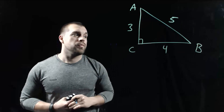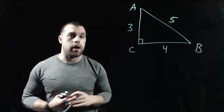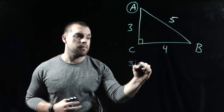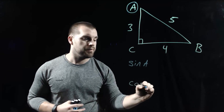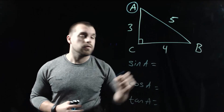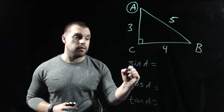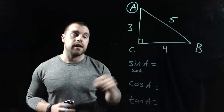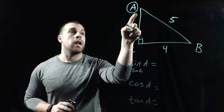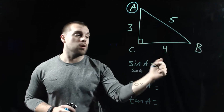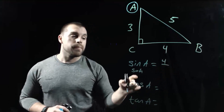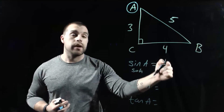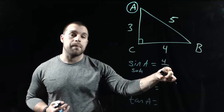Now let's look at an actual triangle. We're going to set up trig ratios using a 3-4-5 right triangle, starting with angle A. For the sine of angle A — that's SOH, opposite over hypotenuse — if we're focusing on angle A, the opposite side is 4 and the hypotenuse is 5. So the sine of angle A is 4 fifths.